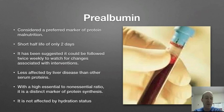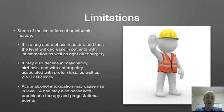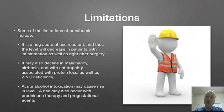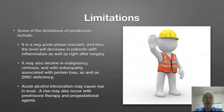That doesn't mean there aren't limitations — there are some limitations we need to be aware of when ordering a prealbumin level. First, it's a negative acute phase reactant. Acute phase reactants go up with inflammation, but this is a negative acute phase reactant, and thus the level will decrease in patients with inflammation as well as right after surgery. So a patient who has an infection or some inflammatory process — we would expect the prealbumin level to go down. It can also decline in malignancy, cirrhosis, enteropathies associated with protein loss, as well as zinc deficiency.